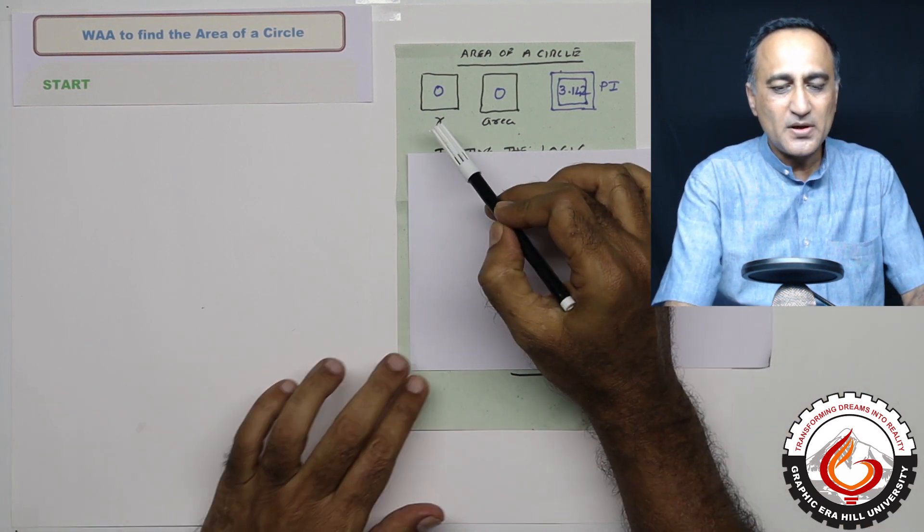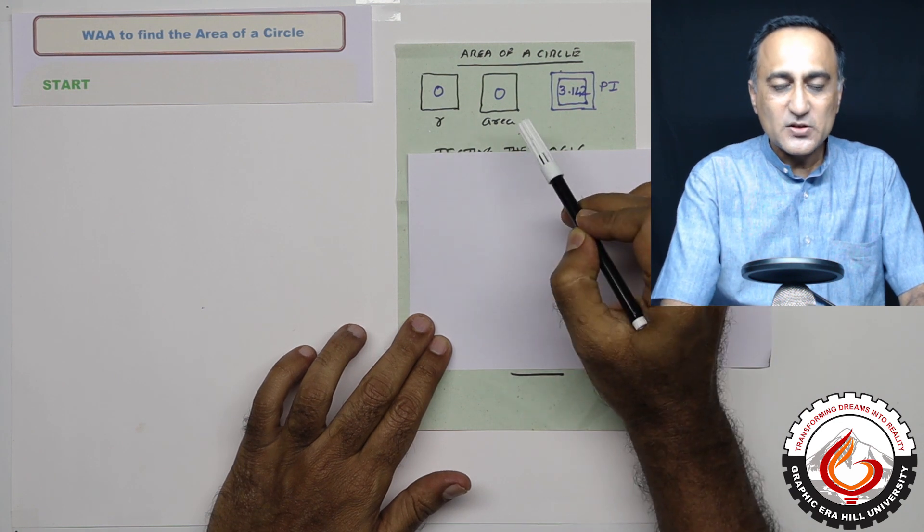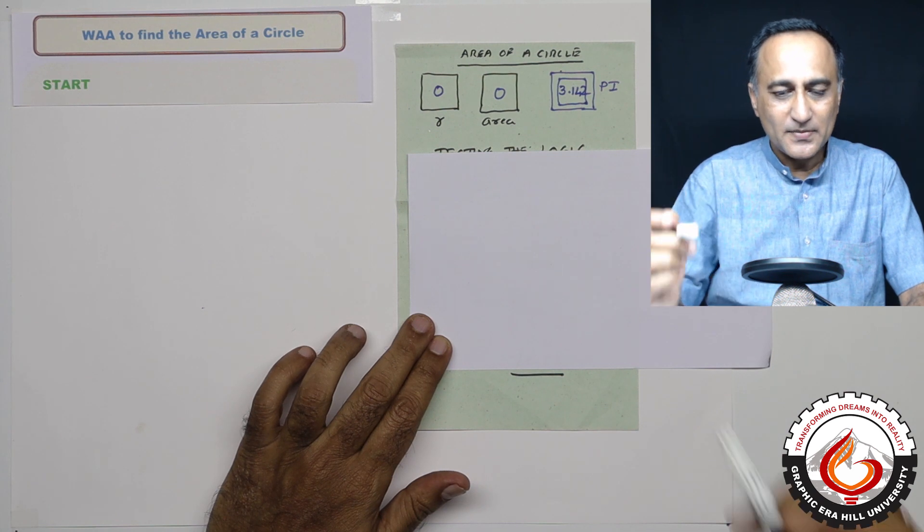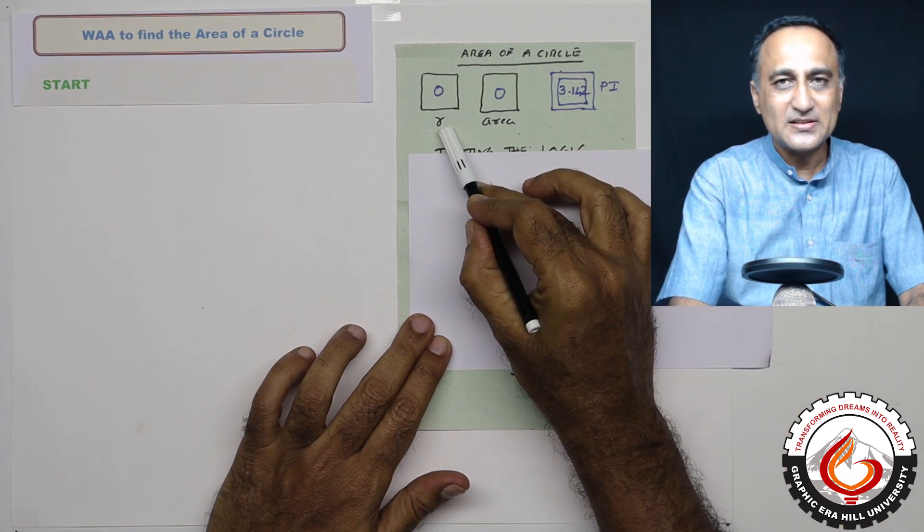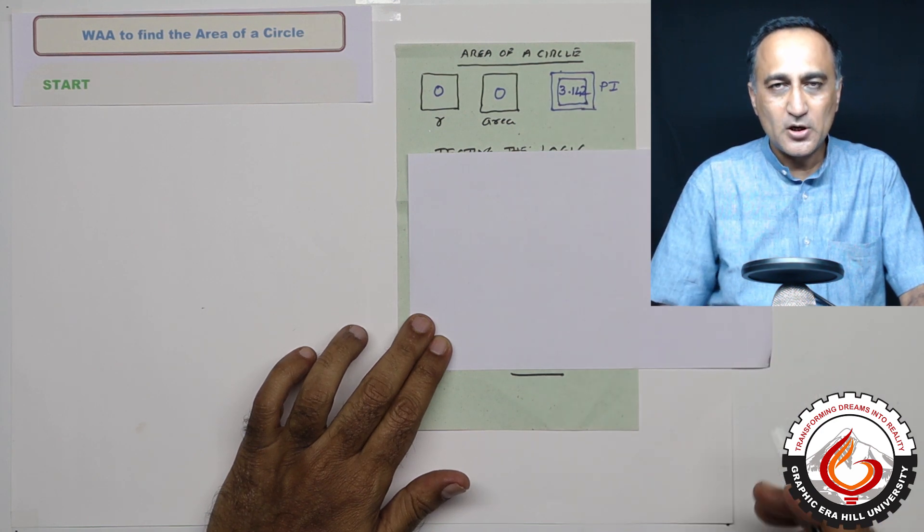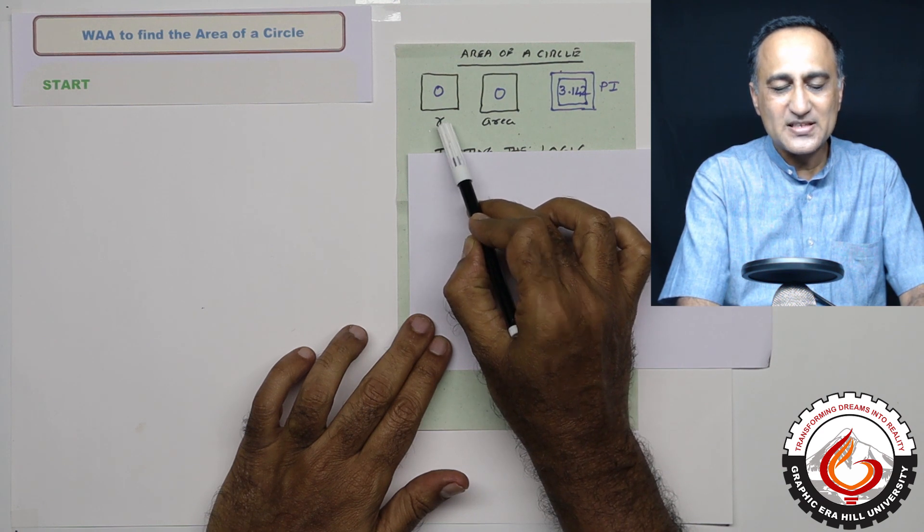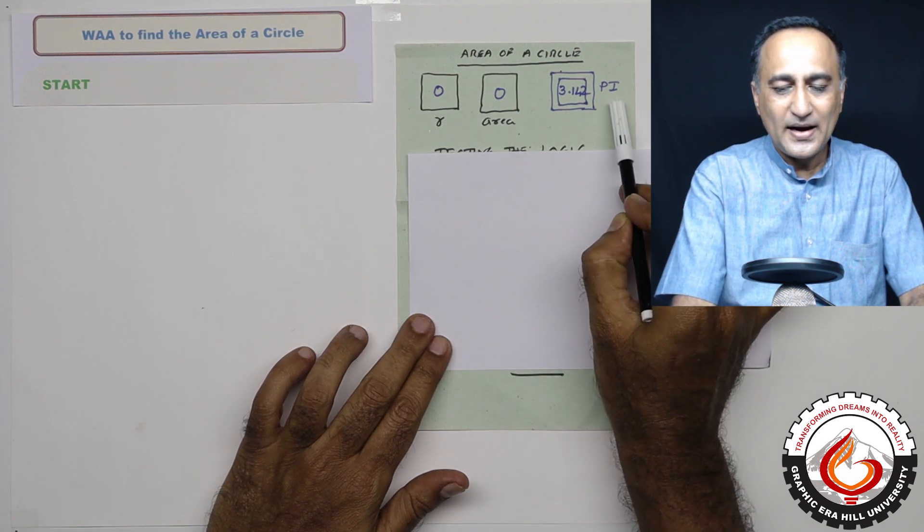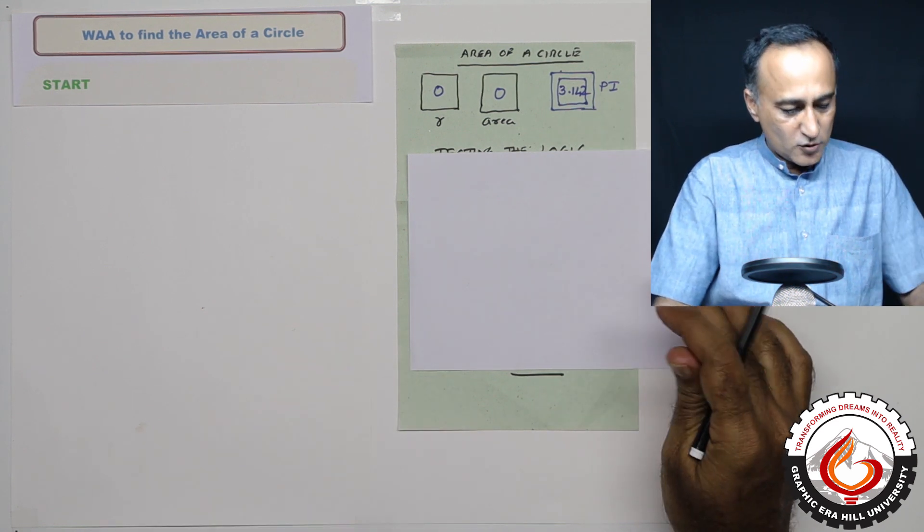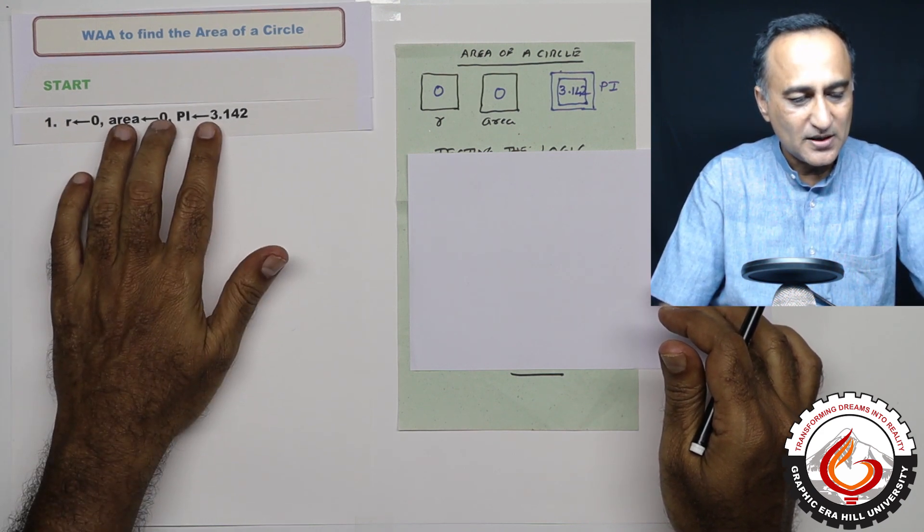The first variable is going to be the radius, which I give the name R. The next variable is going to be the area, because the value of area depends on the radius, and not pi, because pi is a constant and it is 3.142. So the first step, what I do is I declare these two variables: radius is zero, area is zero, and this constant pi is 3.142. So the first step in your algorithm after the start is going to look something like this.